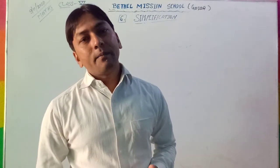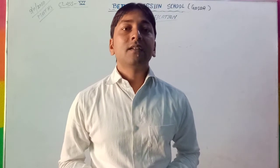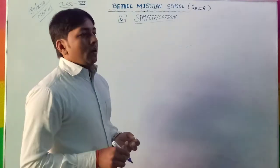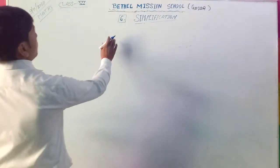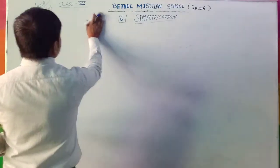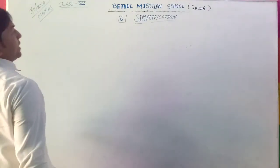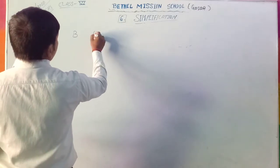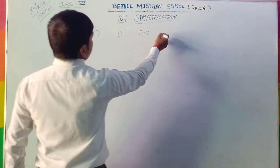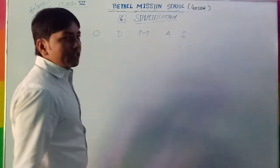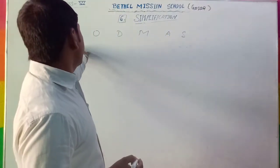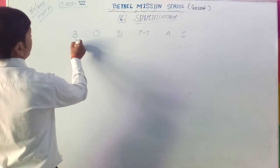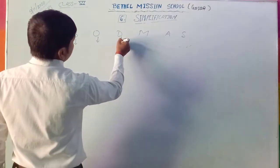But there are some new mathematical symbols used here that you have to learn. Also, you know about the formula of simplification — that is BODMAS. What is BODMAS? Every letter denotes one mathematical symbol.